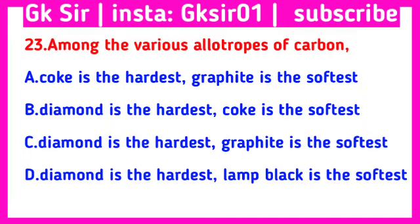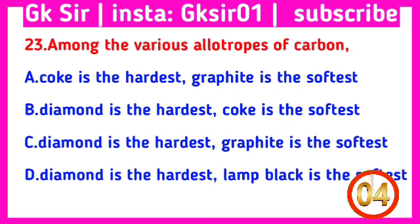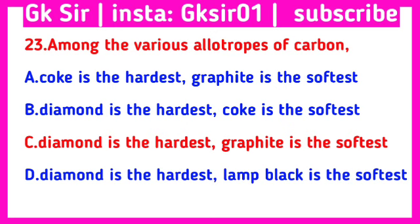Question number 23. Among the various allotropes of carbon — Option A: coke is the hardest, graphite is the softest; Option B: diamond is the hardest, coke is the softest; Option C: diamond is the hardest, graphite is the softest. The correct answer is Option C: diamond is the hardest, graphite is the softest.